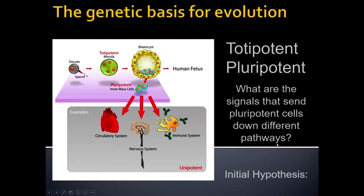You can think of transcription factors as master control genes that turn on and turn off the expression of other genes — we'll look at how they do that in 3.3b. Transcription factors act by turning on or off different pathways. With the right transcription factor, you could have a cascade of other genes turned on that would eventually grow a heart, whereas a different set of transcription factors would produce something like a white blood cell in your bone marrow.